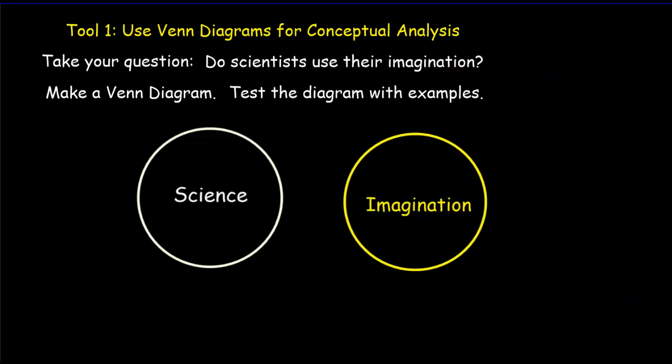Now, a very important tool for being able to do that is conceptual analysis. Conceptual analysis is something that we do quite naturally. It's really just about defining terms. However, I find it very useful to use a Venn diagram to kind of go through the different alternatives. It kind of organizes my thinking. So let's say I've got a very maybe kind of a dull question. Do scientists use their imagination? And I've got two circles here, one representing science, one representing the imagination.